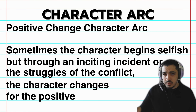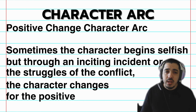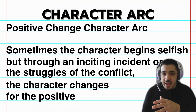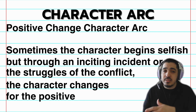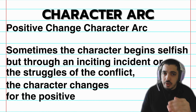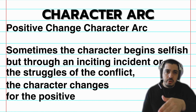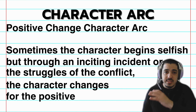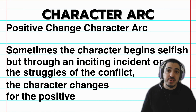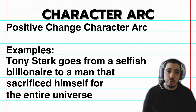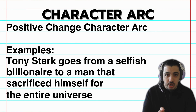Examples of transformational character arcs include Walter White, Tony Stark, and Anakin Skywalker — negative, positive, and both, respectively. For positive change, a character could start off really selfish, all about themselves, egotistical — but as the story continues and they struggle with the inciting incident, all the challenges and stakes could show them go from that selfish person to someone willing to sacrifice everything for others. The best example of positive change is Tony Stark — Iron Man.